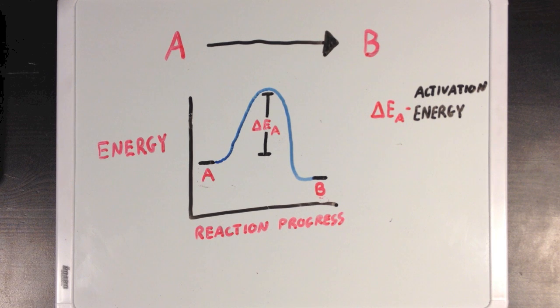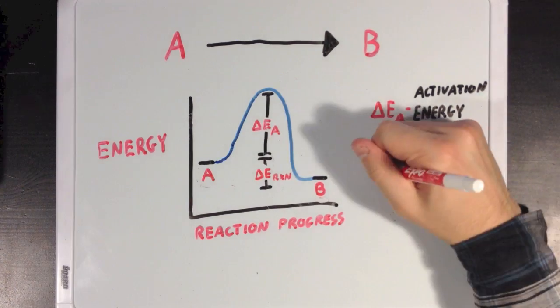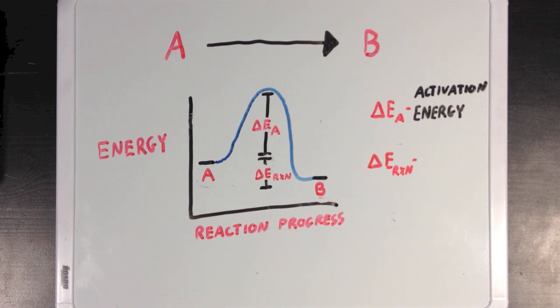And this is the amount of energy that A needs in order to break the reaction barrier, to ultimately get to point B. And you'll also notice that there is a difference of energy between point A and point B. And we call this the reaction energy, or delta E reaction. And it represents the net change in energy level between our reactant and our product. And it also represents the energy that's released into the environment once the reaction is over.